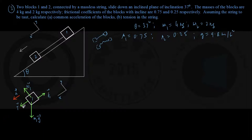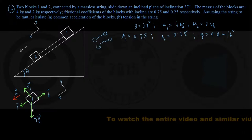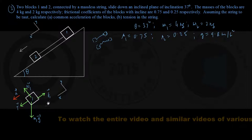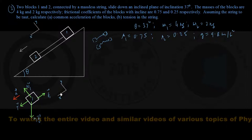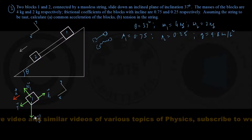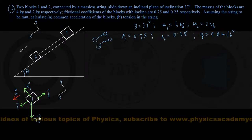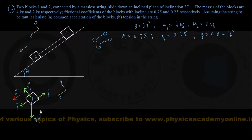The tension force T acts in the plus-x direction, and the normal force N1 acts in the plus-y direction. However, the force of gravity M1g acts neither in the x nor in the y direction, so we need to resolve this gravity force into its x and y components.